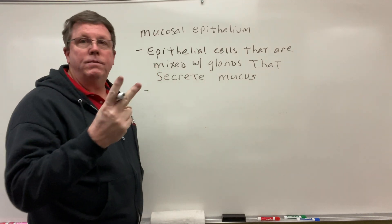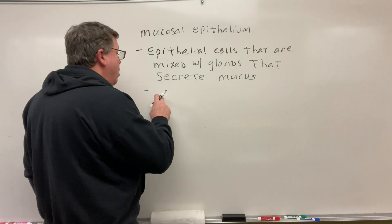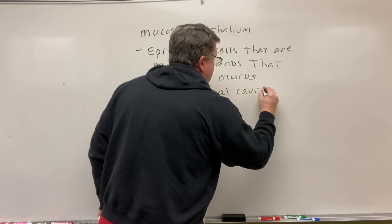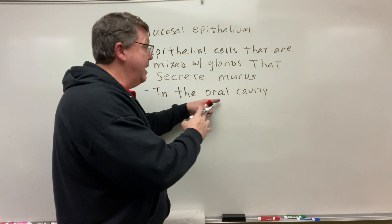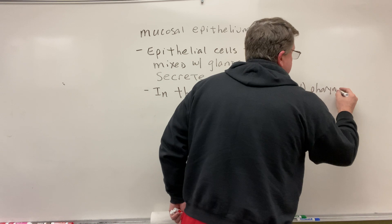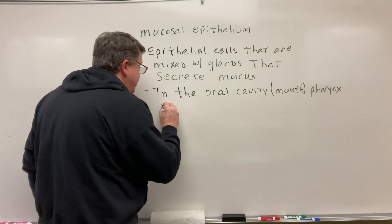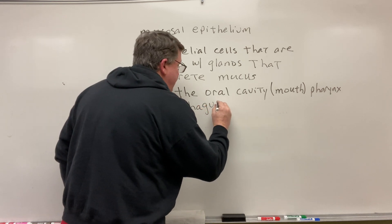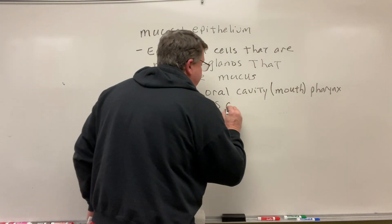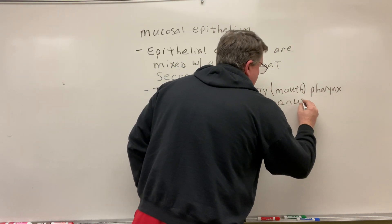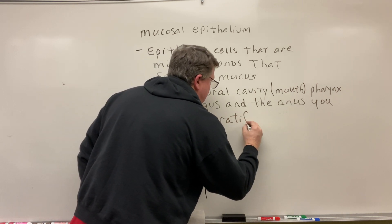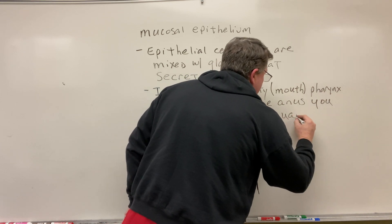There are two types of epithelial cells in the digestive system. The first type is found in the oral cavity — which is basically another name for your mouth — and in your pharynx, which is your throat. So in the oral cavity, the pharynx, the esophagus — the tube that carries food from your throat down to your stomach — and the anus, you have stratified squamous epithelium.